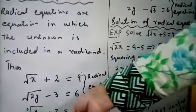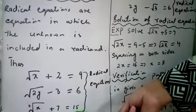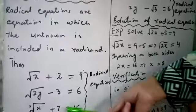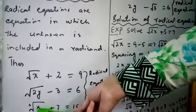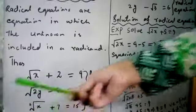Also, third root of x plus 7 equals 15 is a radical equation because the unknown is written in the form of radicand whose root is third root.